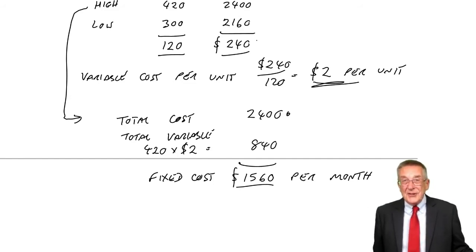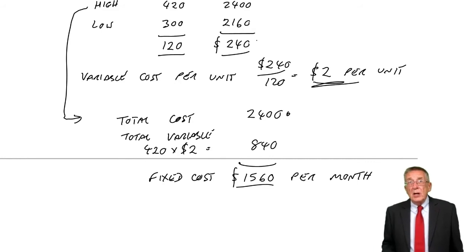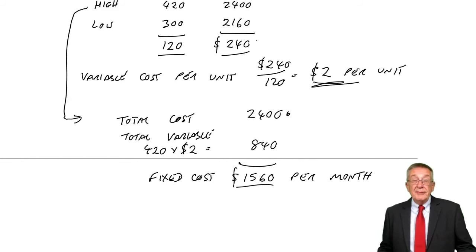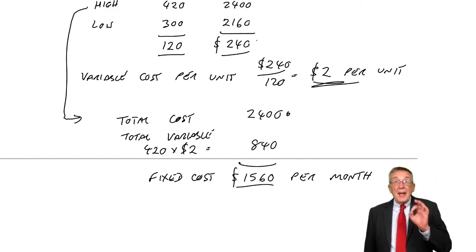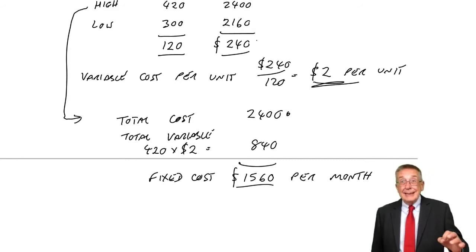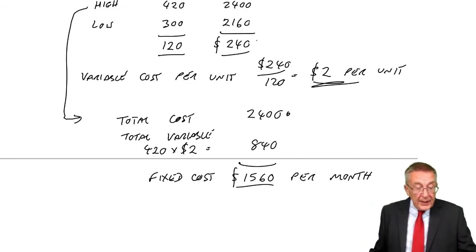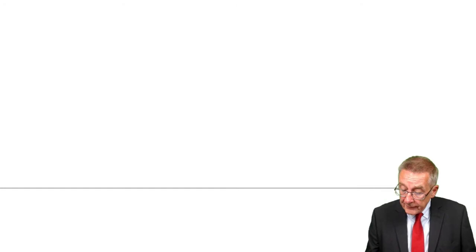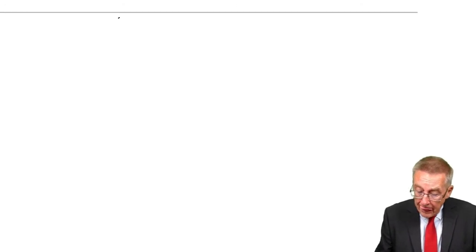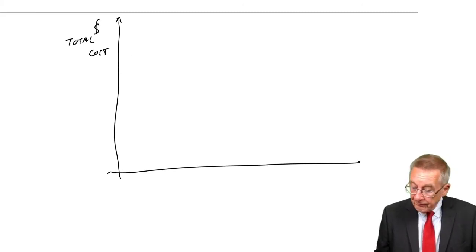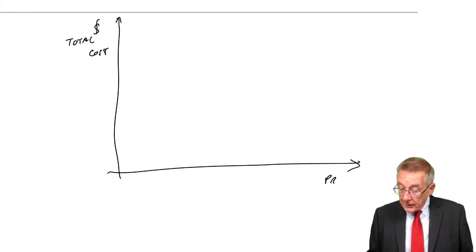And the problem is this. In a perfect world, fixed costs will be fixed each month at here, 1560. Variable costs would be exactly two dollars a unit, more units, more cost. But if you did actually put all these months on a graph, just suppose I did a little graph showing the total cost as against the production.